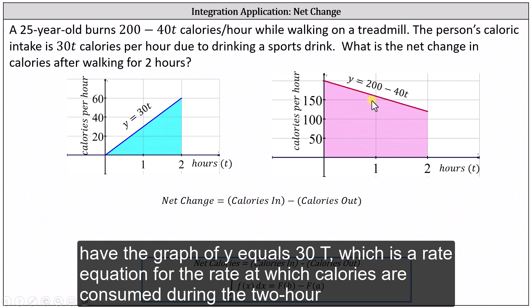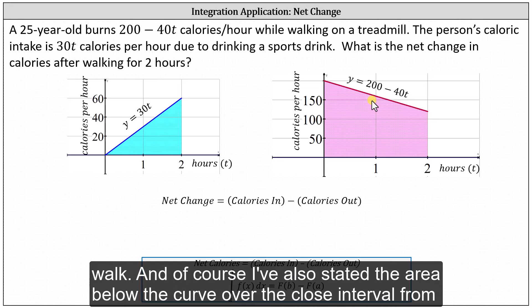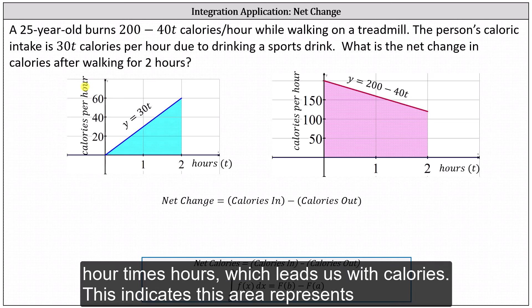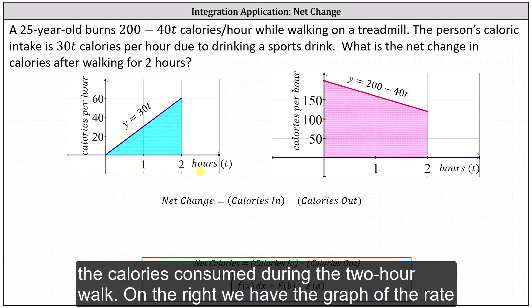On the left, we have the graph of Y equals 30T, which is the rate equation for the rate at which calories are consumed during the two-hour walk. Notice I've also shaded the area below the curve over the closed interval from zero to two hours. If we focus on the units of the area, the units would be calories per hour times hours, which leaves us with calories. This indicates this area represents the calories consumed during the two-hour walk.